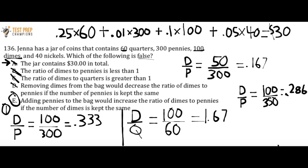If you take nothing else away from this example, understand it this way: imagine you have a chocolate bar and you're splitting it with one friend — you each get half. But if two more friends come along and now there are four people total, everyone gets a smaller piece. So if you keep the top number the same but increase the bottom number when dividing, the overall result gets smaller. Really appreciate you watching. Good luck on your test.